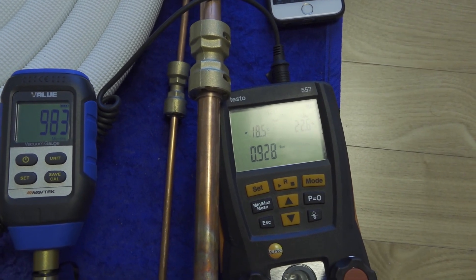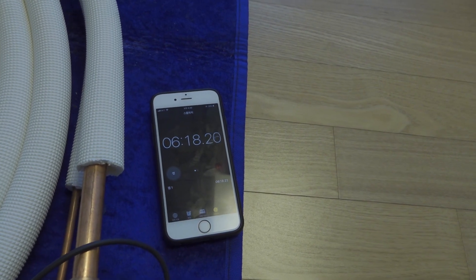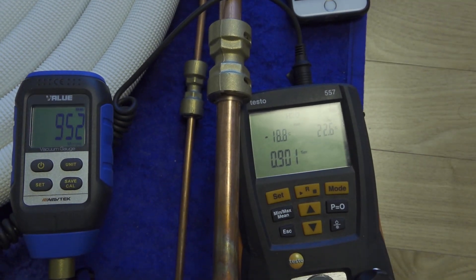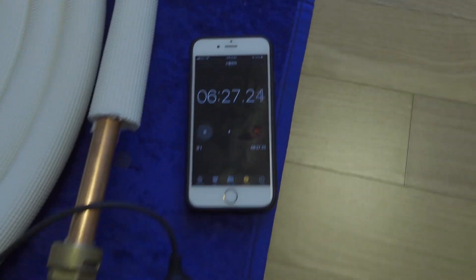Both gauges have just passed 1 Torr. The elapsed time is about 6 minutes 18 seconds. It entered around 1 Torr at about 6 minutes 10 seconds.